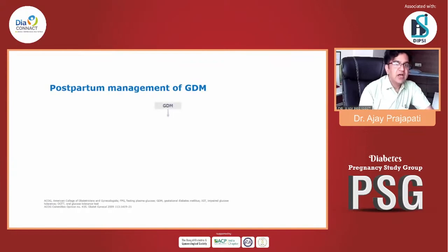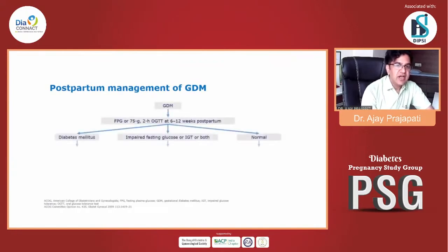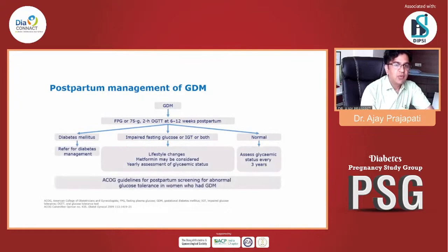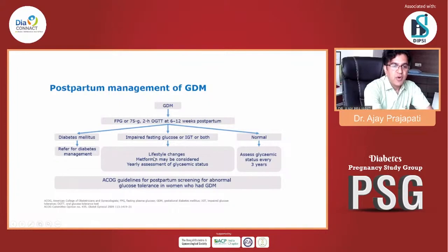There are specific criteria: at the end of six weeks, give 75 grams of glucose as in OGTT. At the end of two hours, follow the result. If it's normal, reassess every three years. If impaired fasting or impaired glucose tolerance, proper lifestyle changes are needed. Metformin may be considered and yearly assessment of glycemia is required. If results convert to type 1 or type 2 diabetes, follow the protocol of diabetes treatment. This is the ACOG guideline for postpartum screening of abnormal glucose tolerance in women who had GDM.